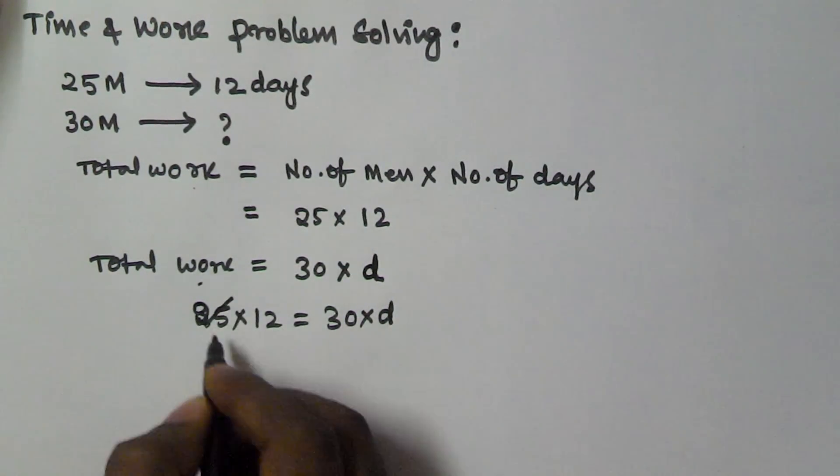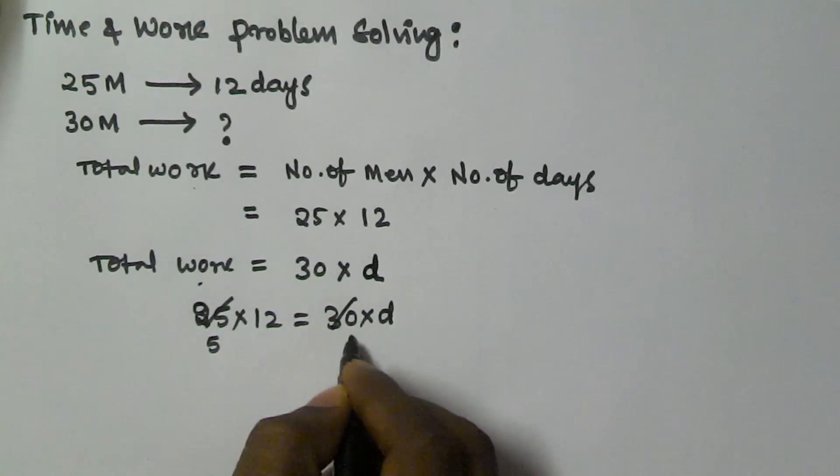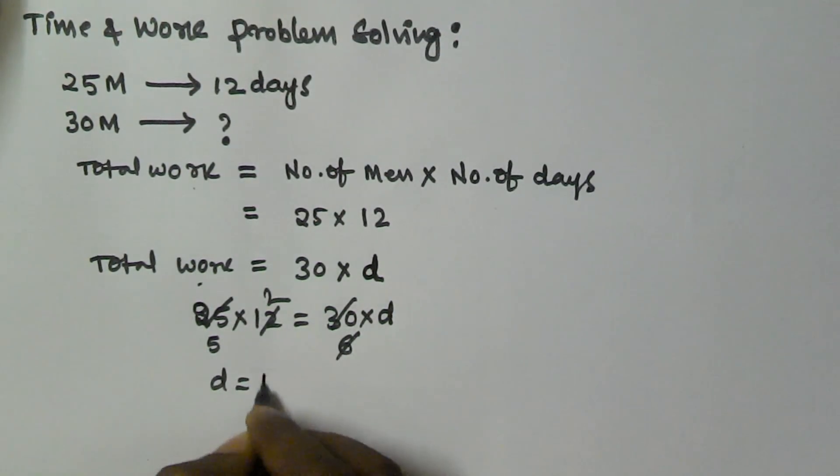Simplifying by dividing, 5 cancels with 5, 6 cancels with 6, leaving 2. So D equals 10 days.